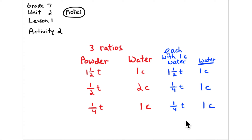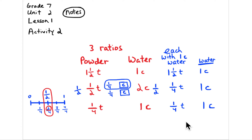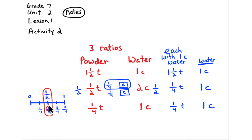How much detail to go into with fractions depends on your students. You can draw a little picture: 2 cups becomes 1 cup, and 1/2 of a 1/2 cup is 1/4 plus 1/4. If they need more support, draw a number line divided into four equal parts — 2 of those parts equals 1/2, so 1/4 plus 1/4 equals 2/4, which is the same as 1/2. This gives you 1/4 of a teaspoon of powder per 1 cup of water.